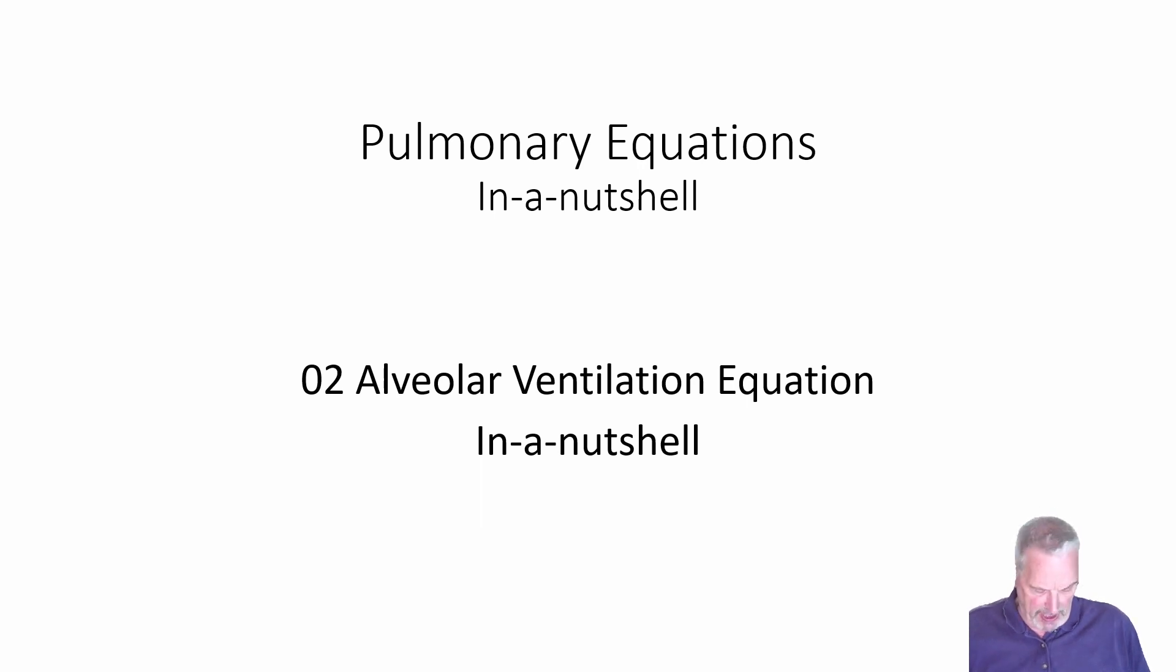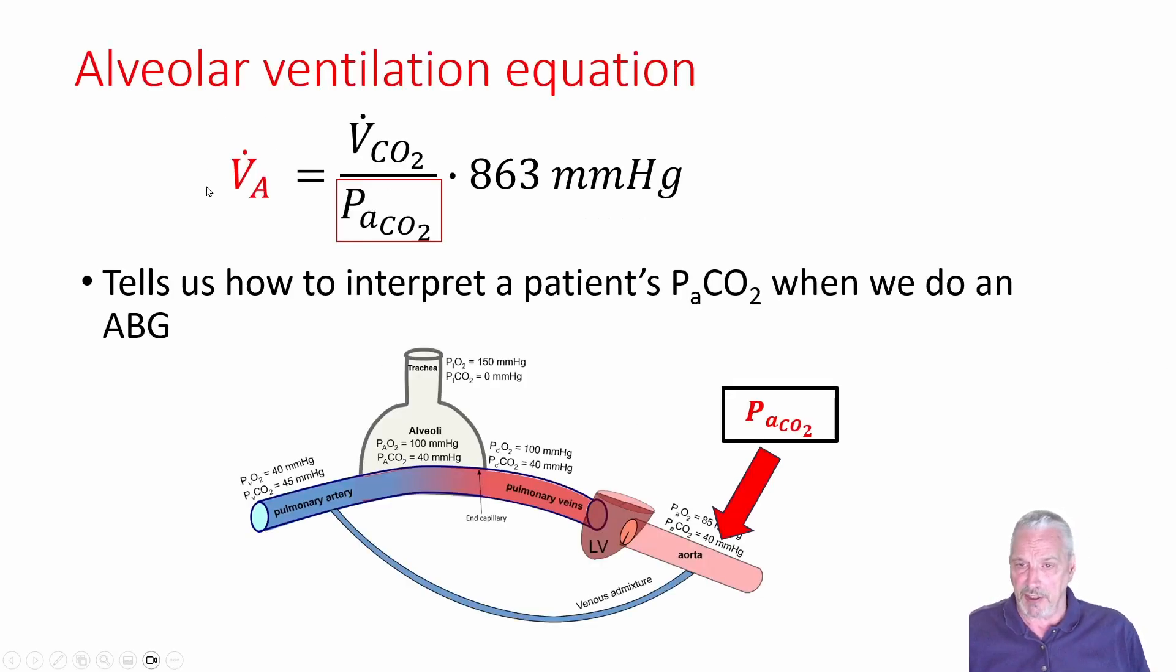If you look at many textbooks, not all textbooks, you'll find that the Alveolar Ventilation Equation is written this way: V̇A equals V̇CO2 over PaCO2 times 863 millimeters of mercury. Sometimes you'll see the 863 just written as 0.863.